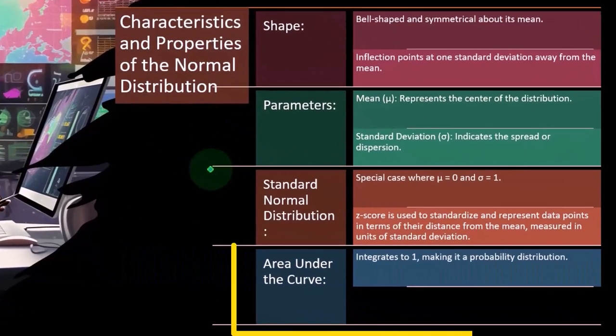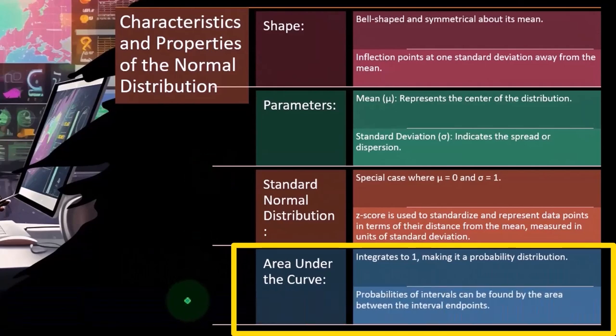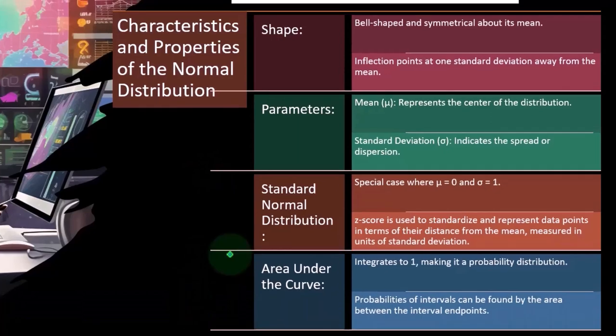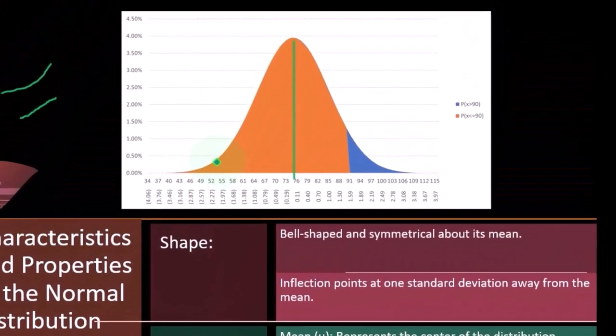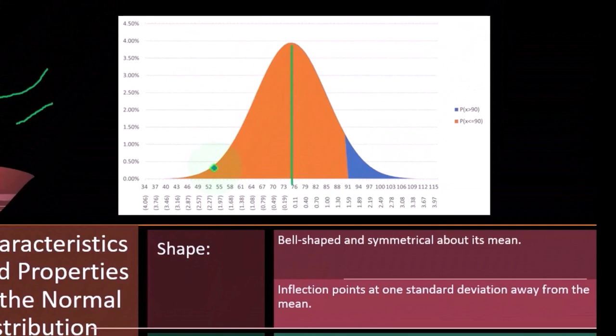Area under the curve integrates to one, making it a probability distribution. Probabilities of intervals can be found by the area between the interval endpoints. So in other words,